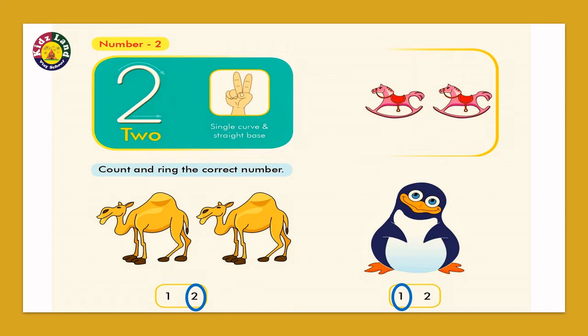So once again, kids, show the number 2 with your fingers. The pointer finger and the middle finger. You have to show it and say it is T-W-O 2.